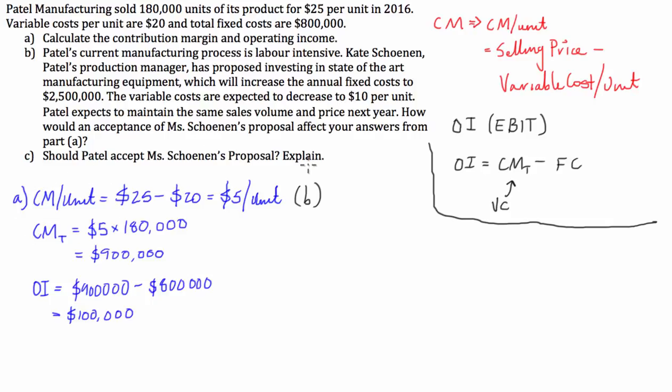Well, let's just go through these formulas again from part A. So we're going to have the contribution margin per unit. It's going to equal our selling price, which is going to remain the same, subtract our variable cost per unit, which is now $10. So our total contribution margin is going to be equal to $15 multiplied by the volume of units that we're going to sell. And that is equal to $2.7 million.